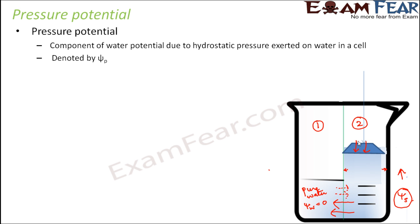Pressure potential is denoted by ψP, where the subscript P stands for pressure. It can be positive or negative. In the example just mentioned, the pressure potential is positive. But in many situations — for example, in plants, in certain cases — the pressure potential can also be negative.